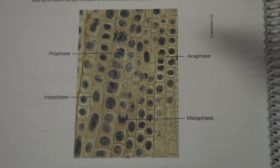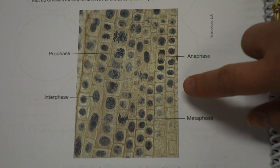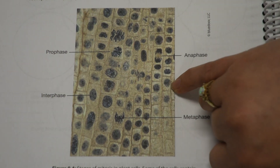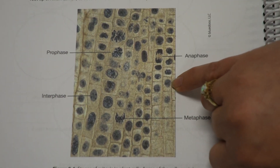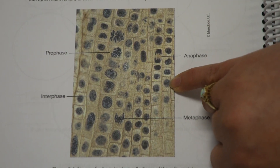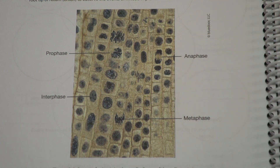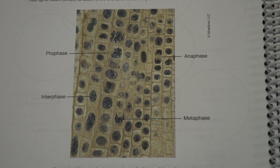As we look at this, similar to the pictures in your lab book, you can actually see what's going on in the nucleus in quite a few of these cells. There are a lot of them that look like they're doing nothing — these are identified as interphase cells. Now, interphase really isn't doing nothing; it's very busy. The nucleus just looks boring, so it's often referred to as the resting phase, which is kind of a joke.